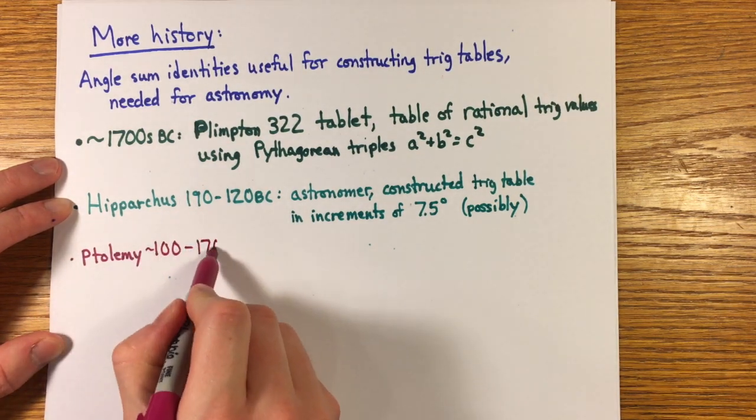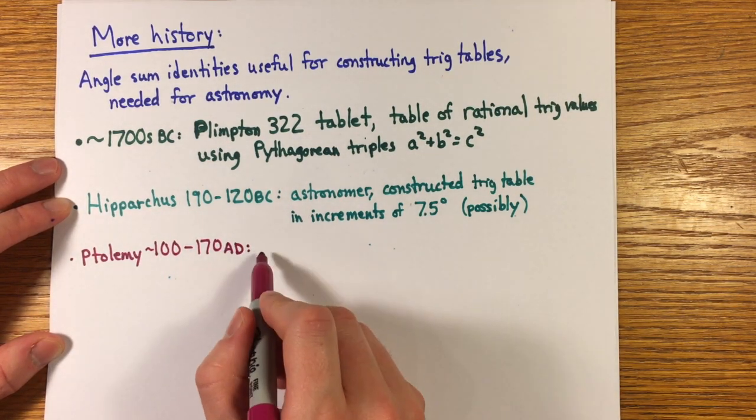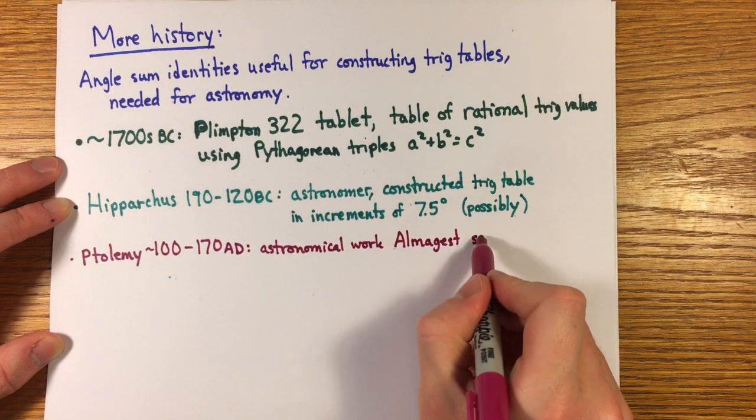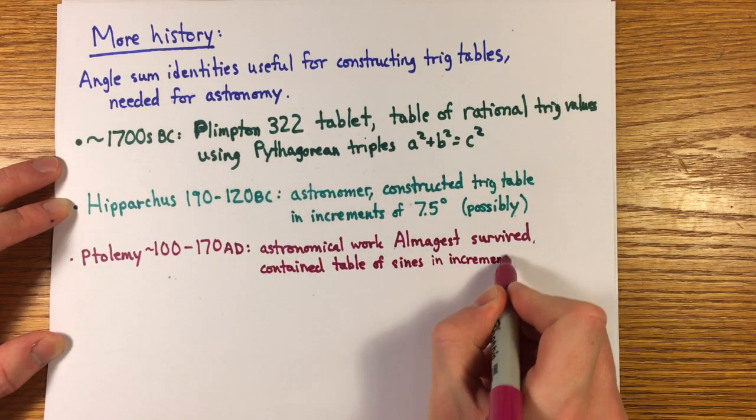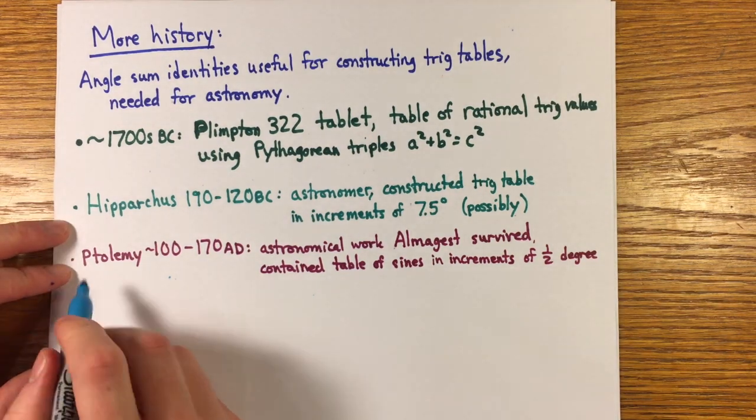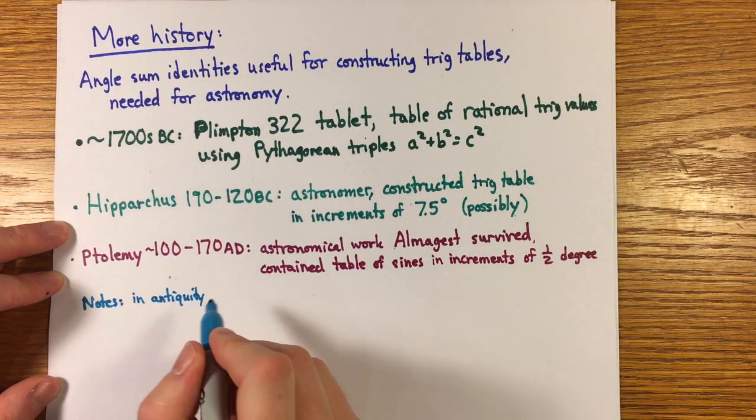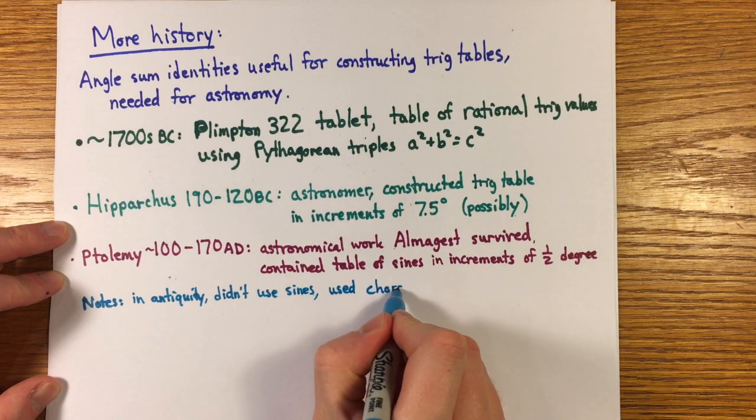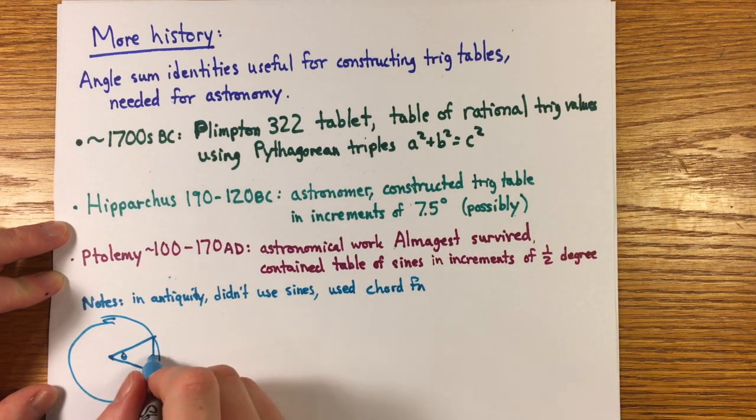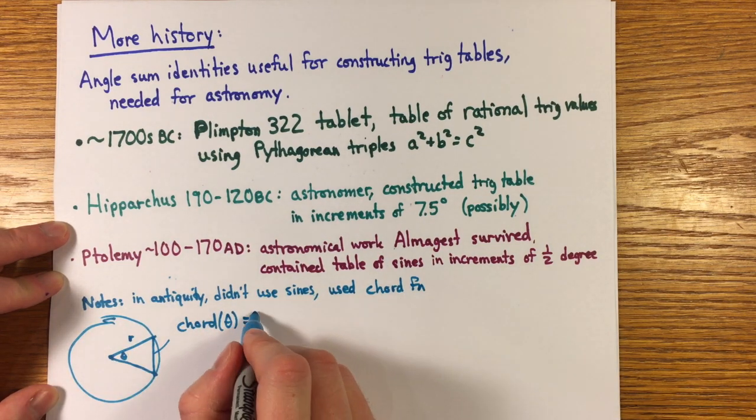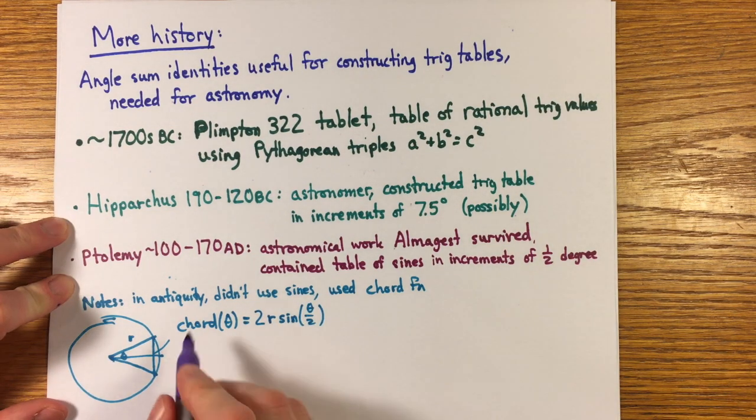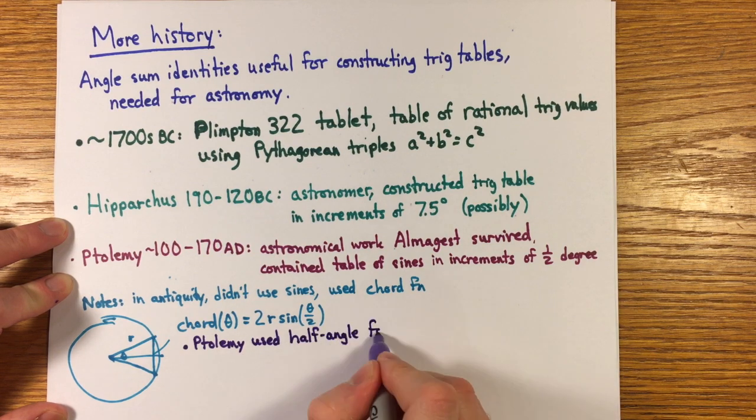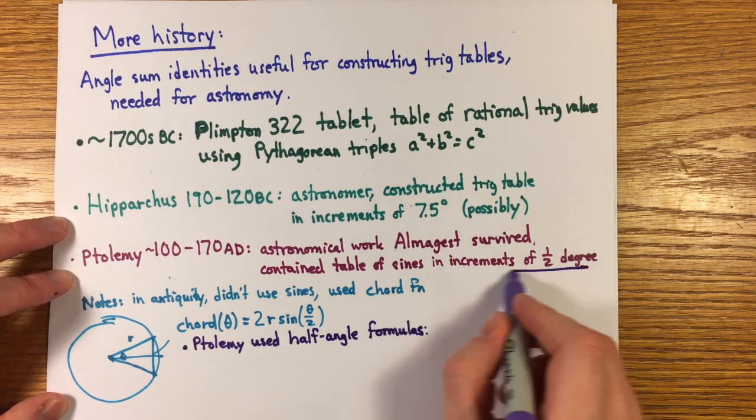A rational trigonometric table based on Pythagorean triples, but the first modern trig tables were made by Hipparchus. His table is now lost and Ptolemy. These ancient astronomers did not work with the sine but with the chord length that subtends an arc, but that's equivalent to making a sine table. They used theorems equivalent to the angle addition formulas and also the half angle formulas which follow from the double angle formulas.